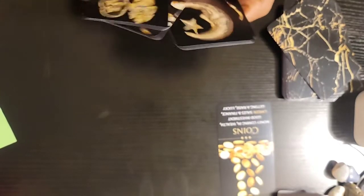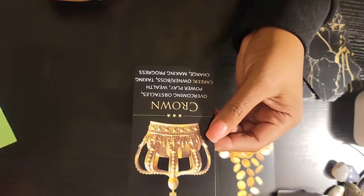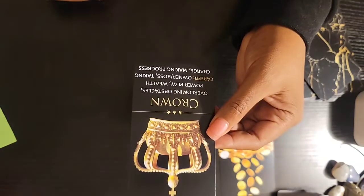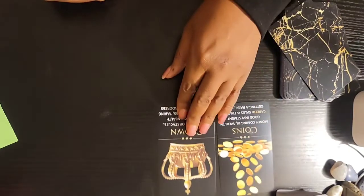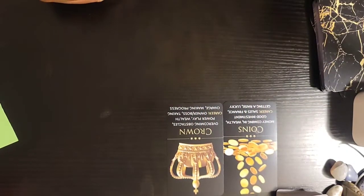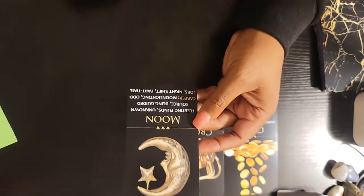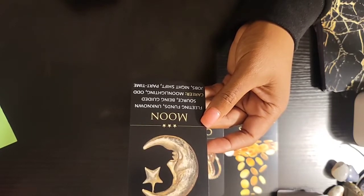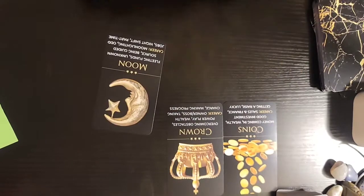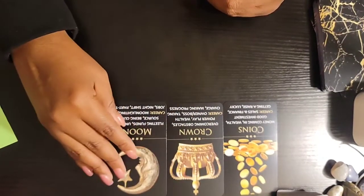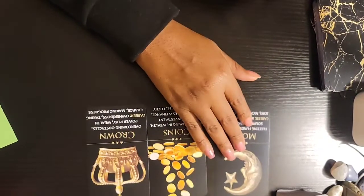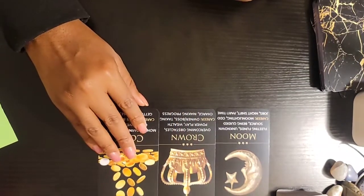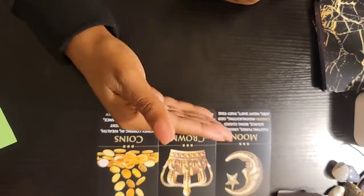We have Crown, Overcoming Obstacles, Power Play, Wealth. You may be a business owner or a boss, taking charge and making progress in your life. This is why you need to move in silence. The Moon came out yet again and it says Fleeting Funds, Unknown Source, Being Guided. You might be moonlighting, you might have two jobs, night shift, working part-time right now.